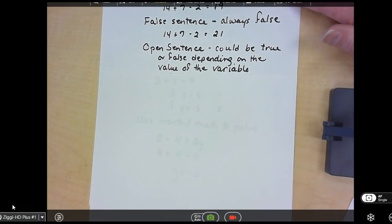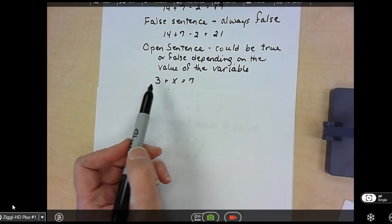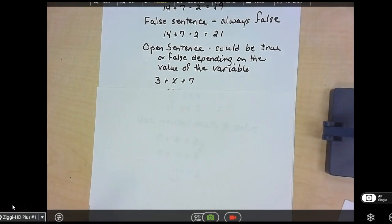But we can have open sentences. And an open sentence can be true or false depending on the value of the variable. So on these, we're going to have a variable. 3 plus X equals 7. So immediately, you all are thinking the value of X is 4. And that would make it true because 3 plus 4 equals 7. But maybe they gave us that the value was 5, and we'd have a false statement. That is why it's called an open statement because you don't know which one you're going to use right now.